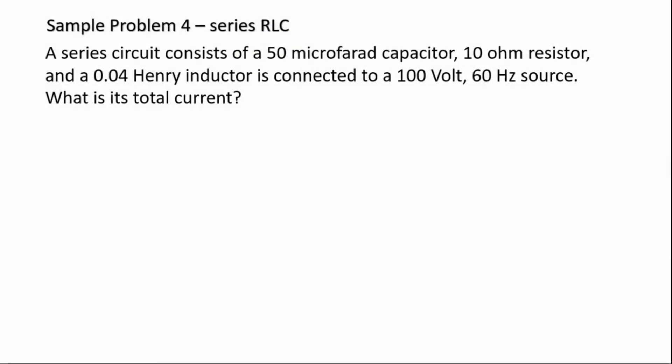Hello guys, welcome again to this channel. Let's try this simple problem regarding series connected resistor, inductor, and capacitor. According to the problem, we are to find the total current given the values of the resistor which is 10 ohms, inductor is 0.04 Henry, and capacitor 50 microfarad. The voltage source is 100 at 60 Hertz frequency.